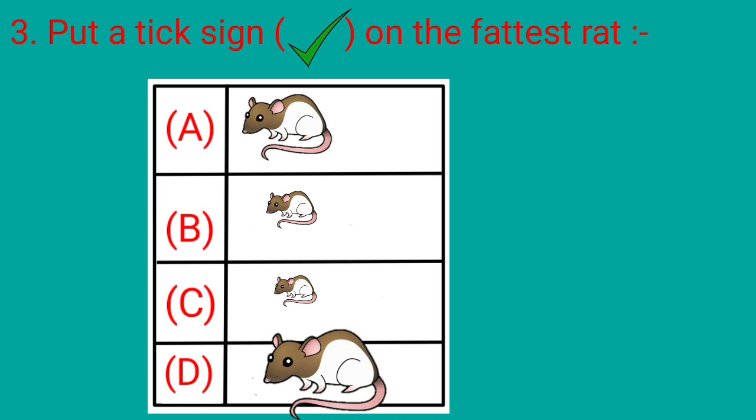Now, question number 3 is: put a tick sign on the fattest rat. Here 4 options are given — A, B, C, and D — and 4 rats of different sizes are visible to us. Let's select the fattest rat among them.